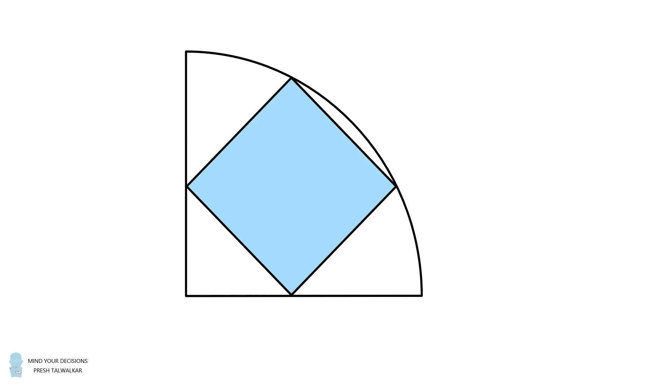Hey, this is Presh Talwalker. A square is inscribed in a quarter circle in such a way that two of its vertices are along the arc of the quarter circle.